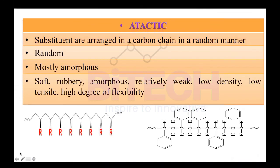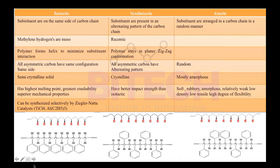In summary, the earlier two types — isotactic and syndiotactic — are crystalline, while atactic is an amorphous polymer. Atactic polymers are very soft, relatively weak, have low density, low tensile strength, and high flexibility. Please take a screenshot of this last slide, which includes all the necessary points for isotactic, syndiotactic, and atactic polymers.